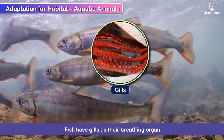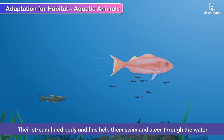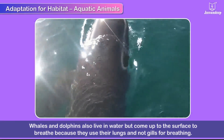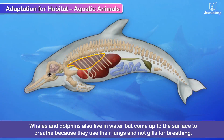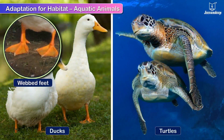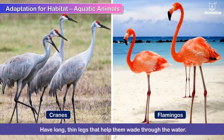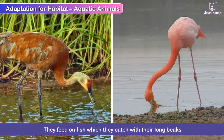Fish have gills as their breathing organ. Their streamlined body and fins help them swim and steer through the water. Whales and dolphins also live in water but come up to the surface to breathe because they use their lungs and not gills for breathing. Some birds live in water or near water bodies. Ducks have webbed feet and turtles have flippers to swim. Cranes and flamingos have long thin legs that help them wade through the water, and they feed on fish which they catch with their long beaks.